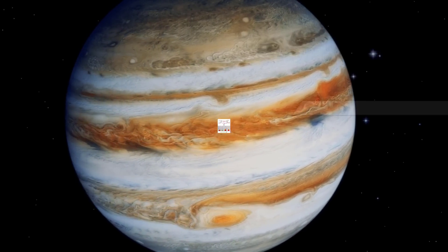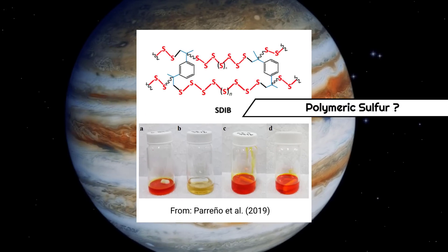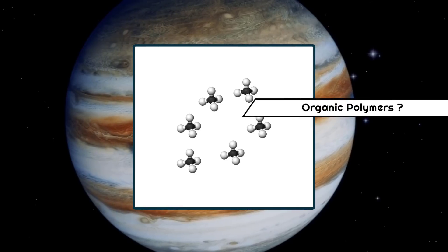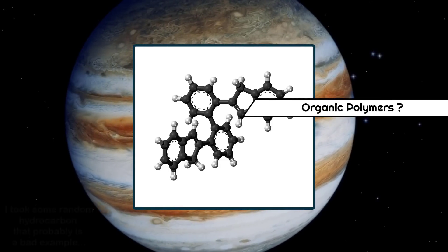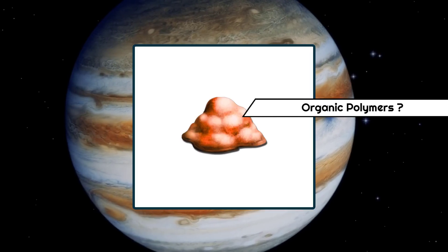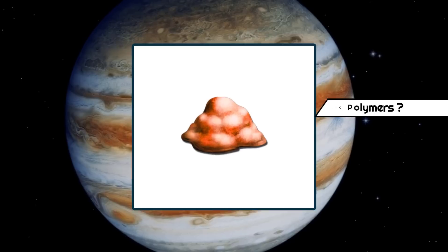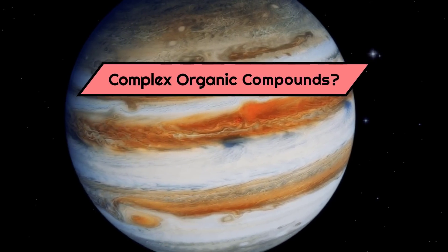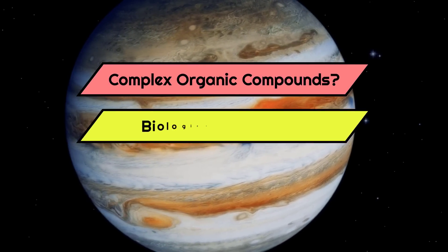The seemingly most likely candidate, polymeric sulfur, is discounted by the duo. Chemical products resulting from reactions involving methane and hydrogen in simulated conditions seem to fit the light absorption patterns much better. They build a compelling case for the existence of not only complex organic compounds in Jupiter's atmosphere, but perhaps even biological processes.